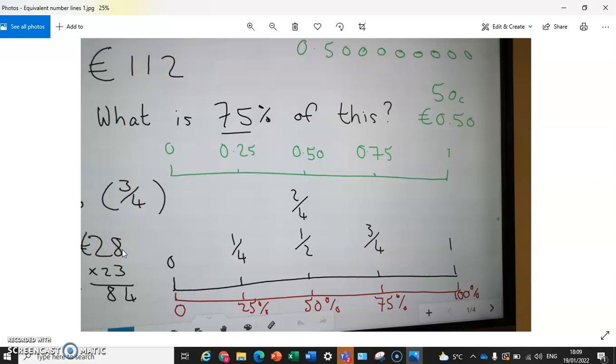So that gave us 1 quarter, so to figure out what 3 quarters is, you just multiply by the number on top, which is 3. 28 multiplied by 3 is 84. So 84 euros is 3 quarters or 75% of 112.